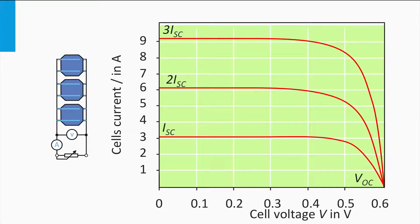A second way of connecting solar cells is in parallel. Here you see three solar cells connected in parallel. The IV curve shown is that of a single solar cell. Parallel connection means that the voltage is the same over all solar cells; however, the currents of the solar cells add up. If we have two solar cells connected in parallel, the current increases two times, whereas the voltage remains the same. If we have three cells in parallel, the current becomes three times as large, while the voltage is the same as for a single cell.